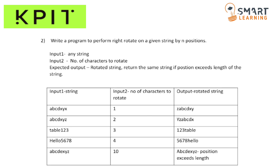The second coding question involves performing a right rotation on a given string by n positions. They have given one input string and a number of characters to rotate. Based on that number we rotate the input string. For example, the input 'a b c d x y z' with rotation value two means the last two characters y and z move to the first positions. Also, if the number of characters to rotate is greater than the length of the string, we have to return the input string as-is.